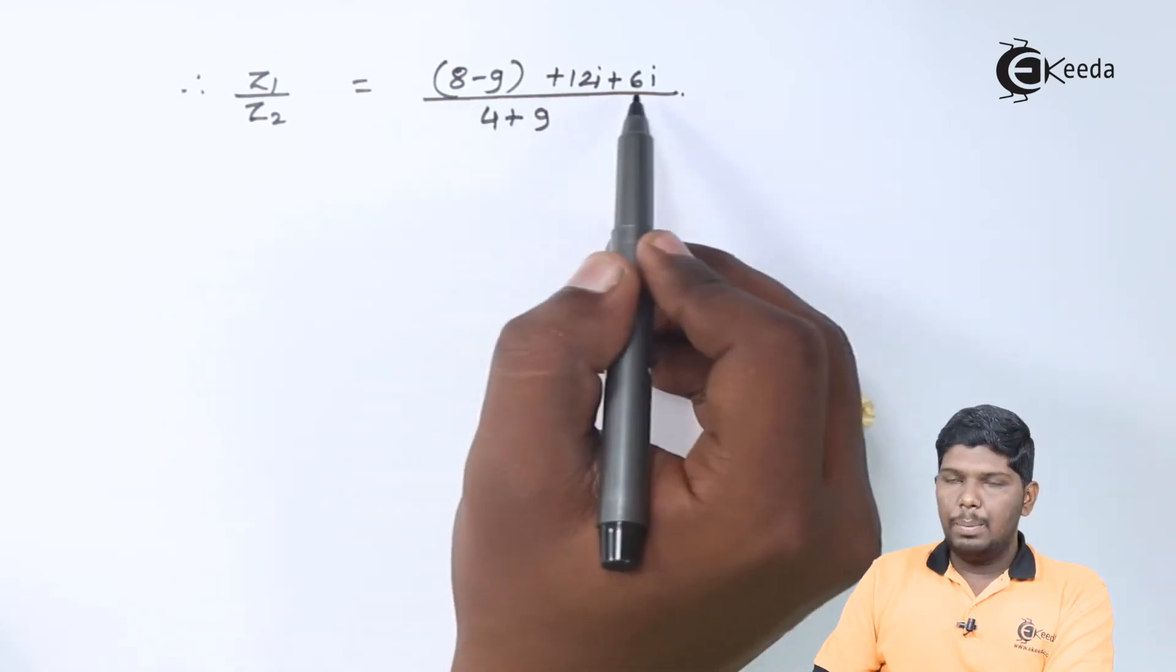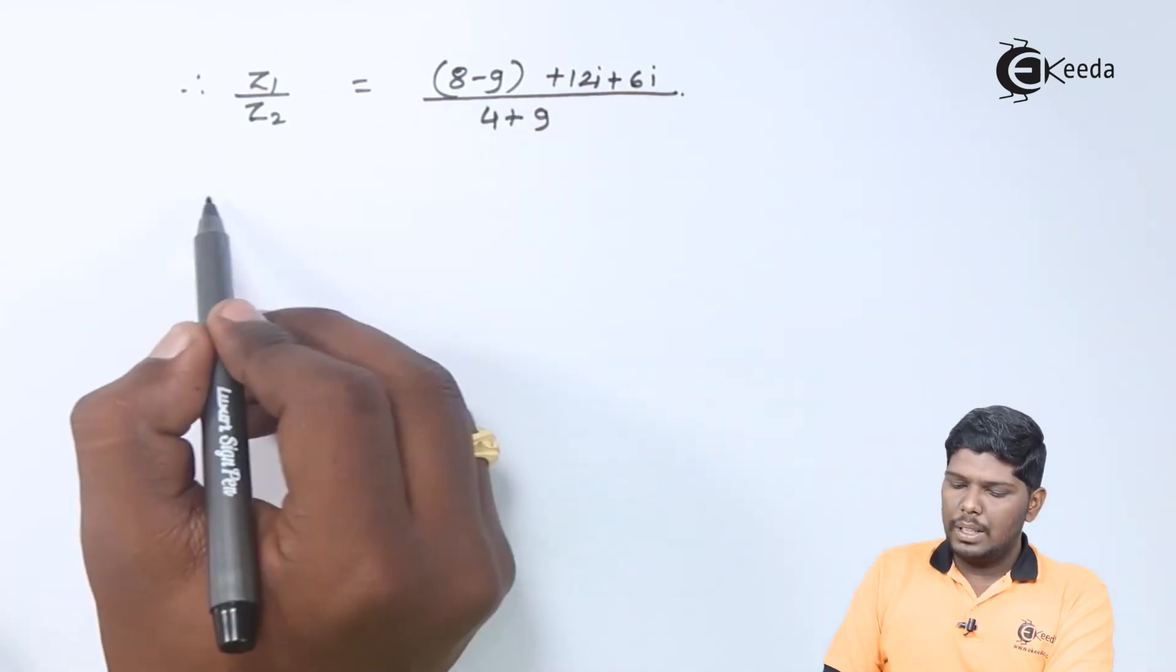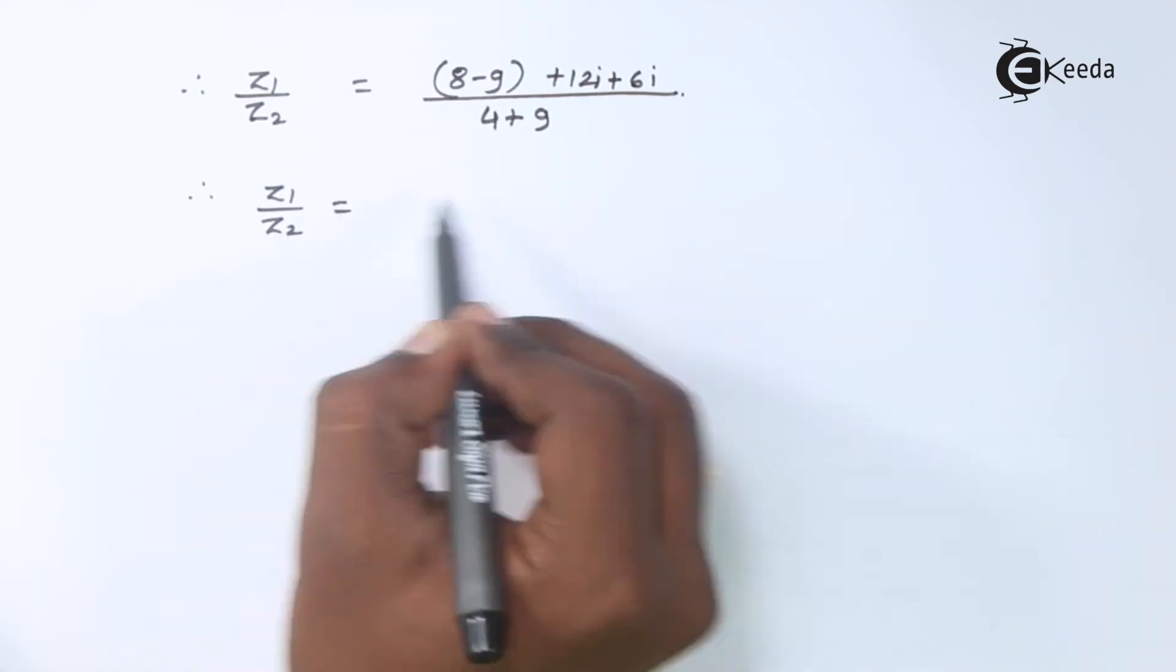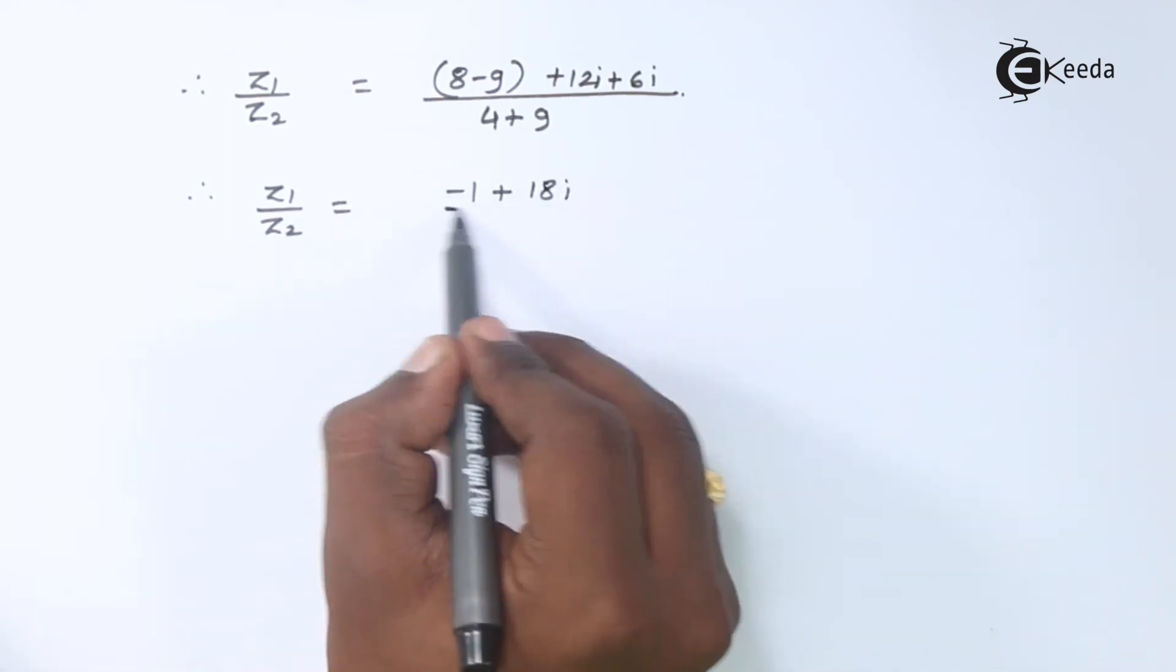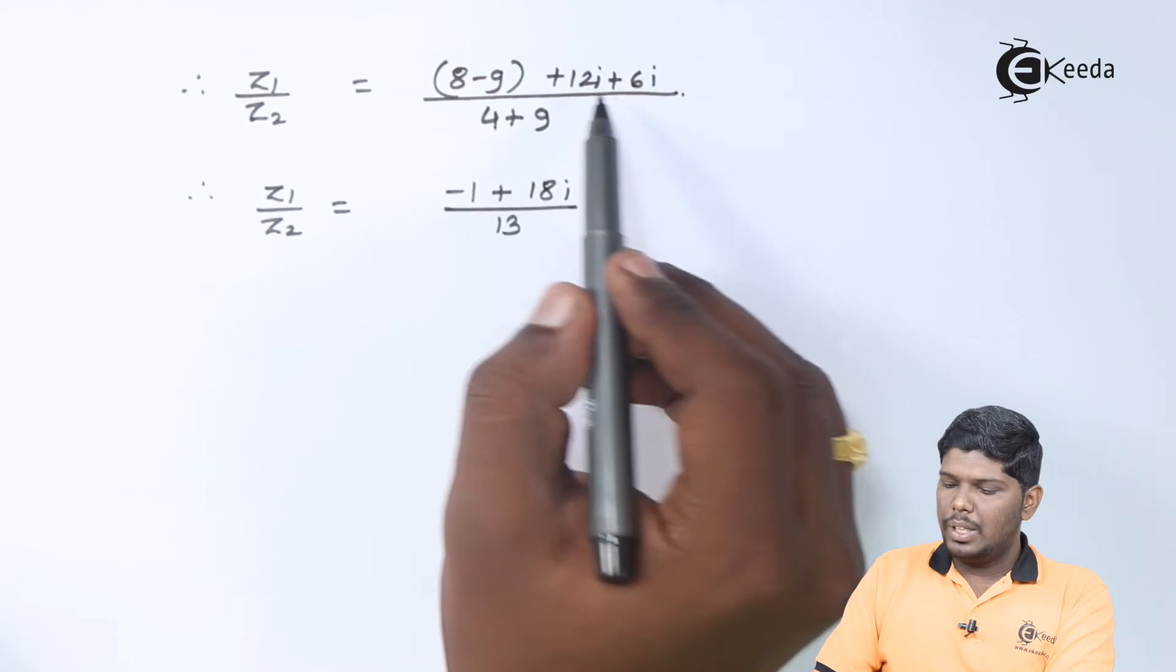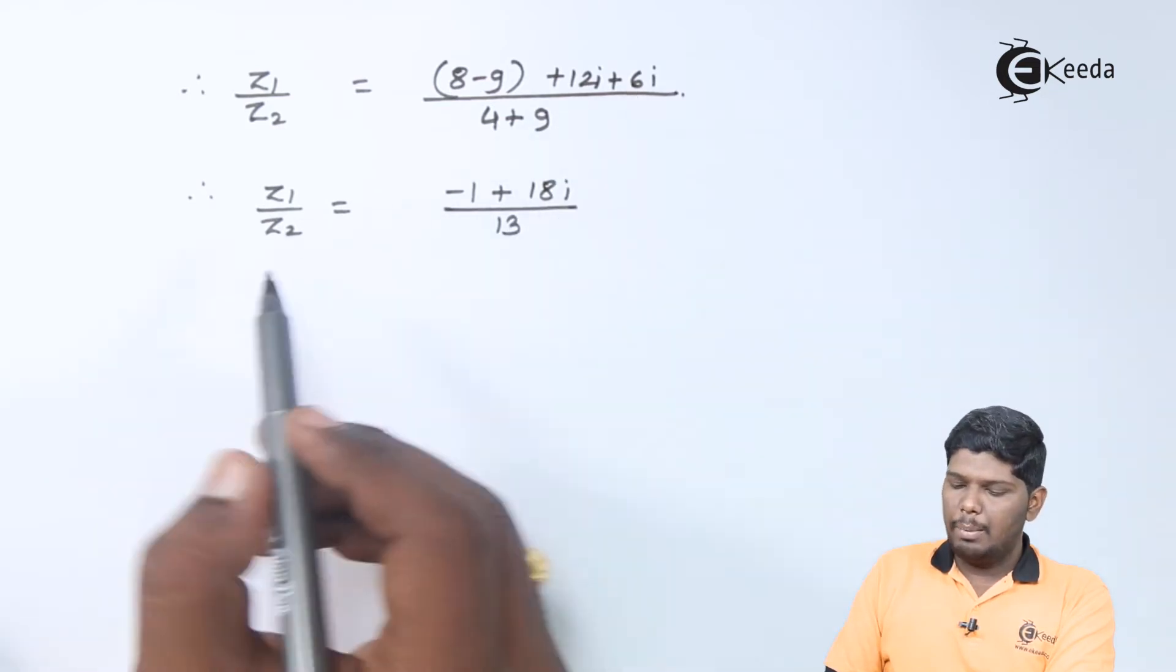Therefore, we have 8 minus 9 plus 12i plus 6i upon 4 plus 9. That will give you 8 minus 9 is minus 1. 12 plus 6 is 18i divided by 13.